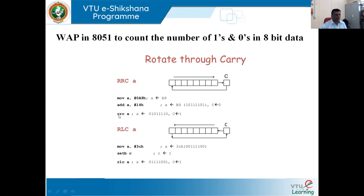Now using RRC A: the LSB bit (1) goes to the carry flag location, and the previous carry flag value (0) comes to the MSB. After rotating, the content of A changes from BD to 5E (0101 1110), and the carry flag changes from 0 to 1. We can use this RRC instruction for counting the number of ones or zeros.